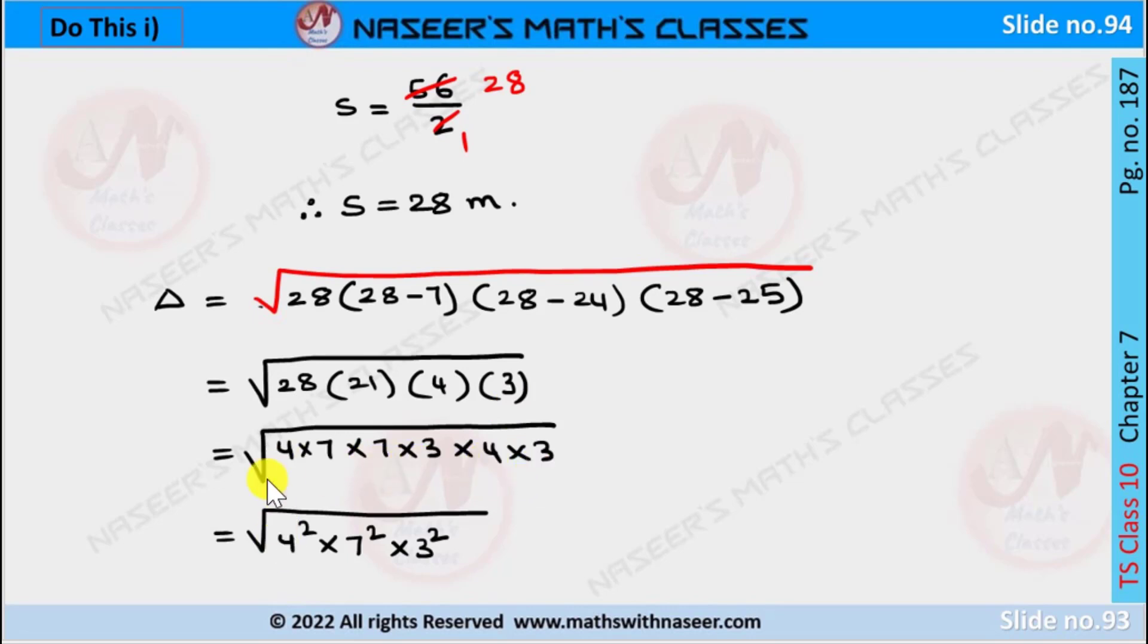Then here we have two 4s, so it can be written as 4 squared. Seven twice gives 7 squared, and 3 twice gives 3 squared.